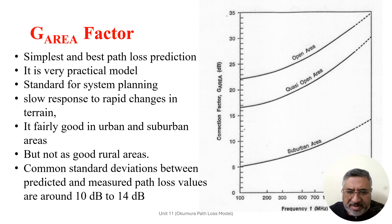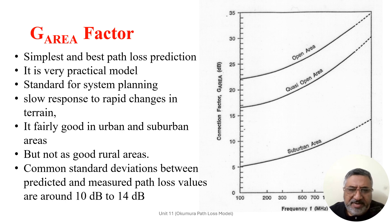Okumura differentiates the correction gain G area into three broad area types: open area, quasi-open area, and suburban areas. At 100 MHz, the suburban area value is close to 5 dB, the quasi-open area value is close to 16 or 17 dB, and the open area value is approximately 21 to 22 dB. These values increase continuously with higher frequency, reaching a maximum of close to 35 dB for the open area G factor, approximately 27 to 28 dB for quasi-open area, and close to 11 or 12 dB for suburban areas.